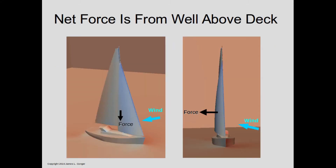Here we have a three-dimensional view of the same force diagram where the net force generated by the sails is shown as a black arrow. The net force occurs about a third of the way up the rig and is slightly in front of the mast — equivalent to attaching a line at about the first spreader and pulling mostly to the side but somewhat forward. Note that because of the position of that force vector, the net force tends to make the boat round down, not round up. We'll discuss reasons for boats rounding up in strong winds in part three.